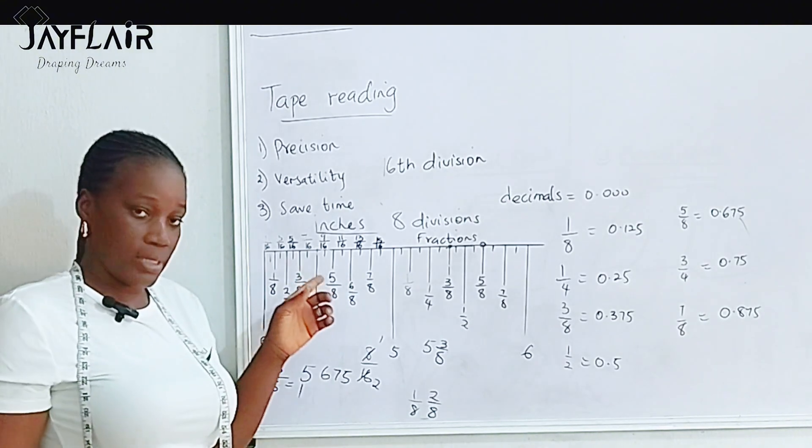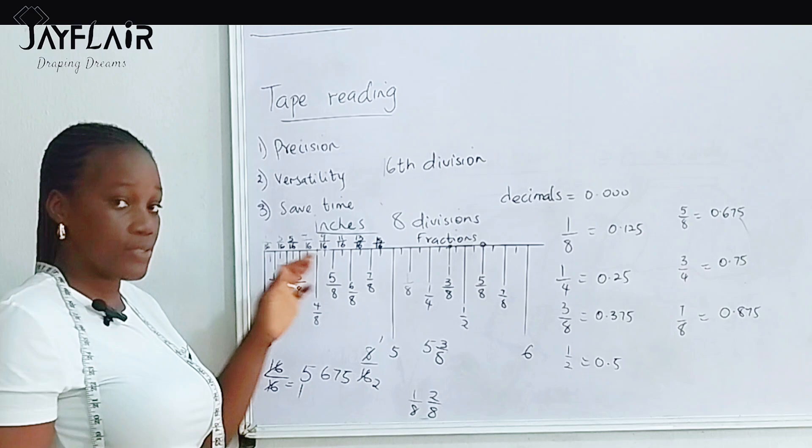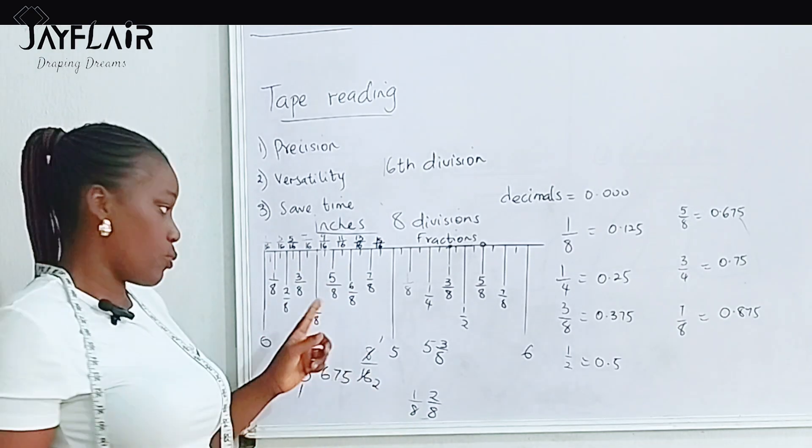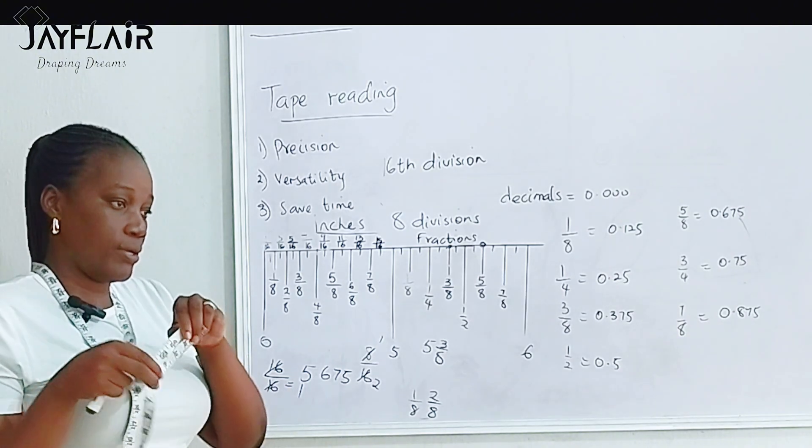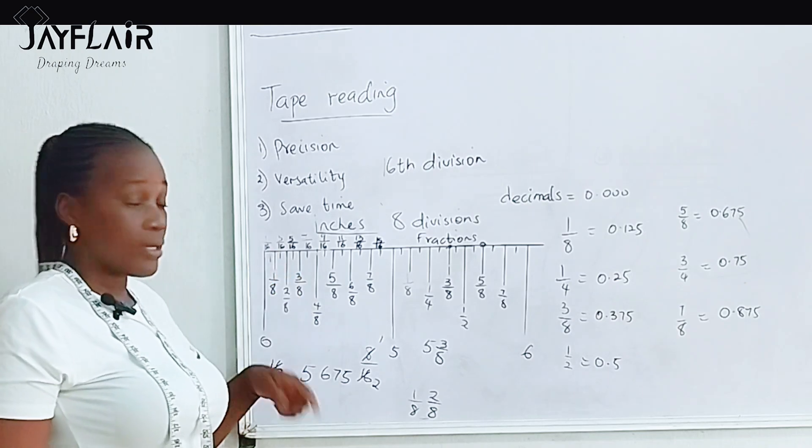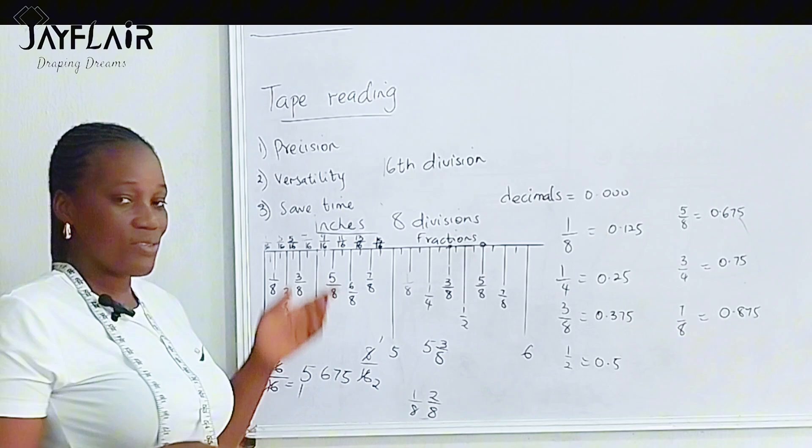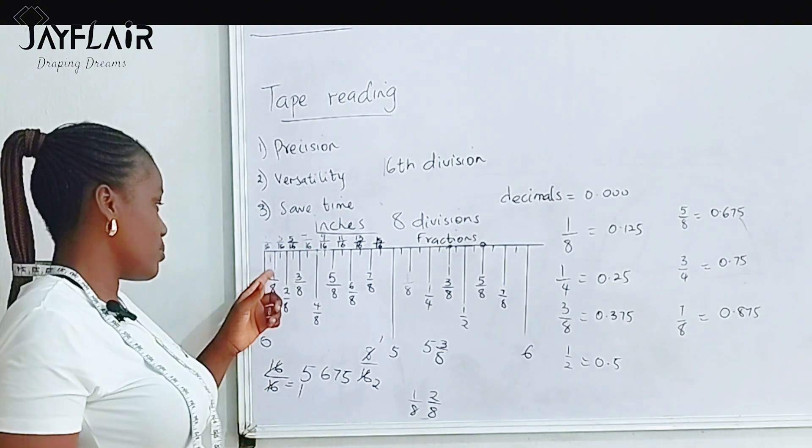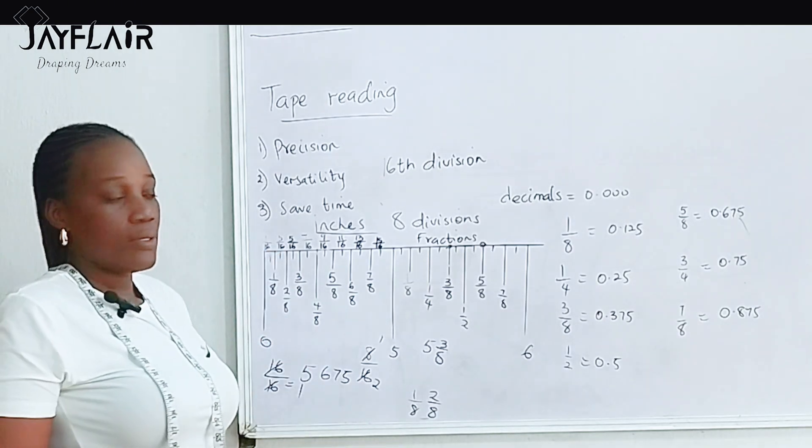So I just want you to note that in between each of these divisions, there are smaller divisions that your calculator will give you. If you're not working with your calculator, you're working with just the measuring tape, fine, you can just be around the 8 divisions. But if you're working with calculator, you're likely to come across the 16th division. So when you get to that point, please do not worry. Just know that your calculator is giving you the answer in 16th divisions.